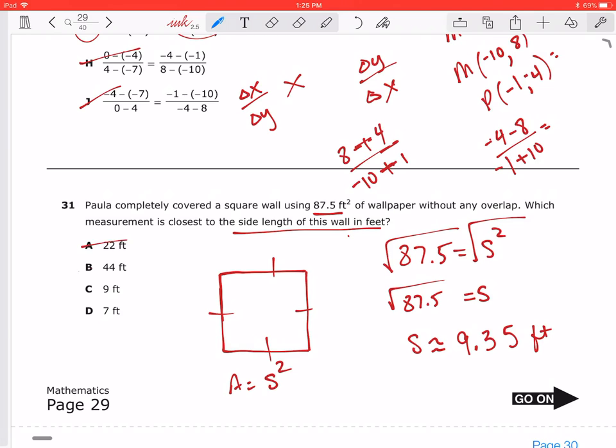Now, which one of these is closest? Well, A is definitely out. And B is definitely also out. So the only one that comes close to that side length is C, 9 feet.